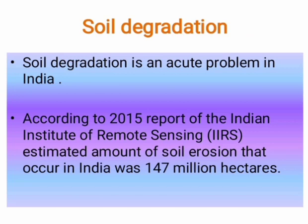Soil Degradation is an acute problem in India. According to a 2015 report of the Indian Institute of Remote Sensing, IIRS, the estimated amount of soil erosion that occurred in India was 147 million hectares. The main problems of Indian soils are soil erosion, degradation of soil, water logging, saline and alkaline conditions, and salt floods.